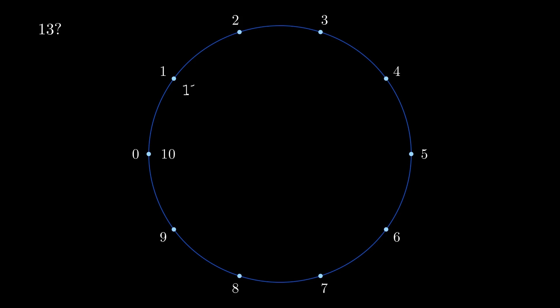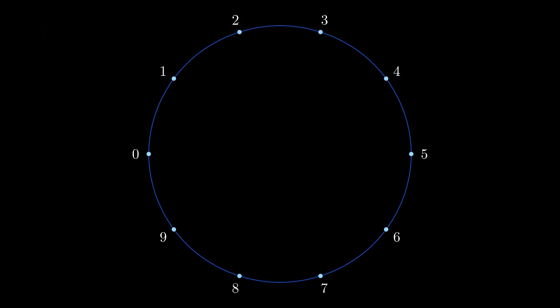What about fractions? How would you find two point five in here? That's easy — two point five should be in the middle of two and three. And this is how all real numbers can be found in this very circle.